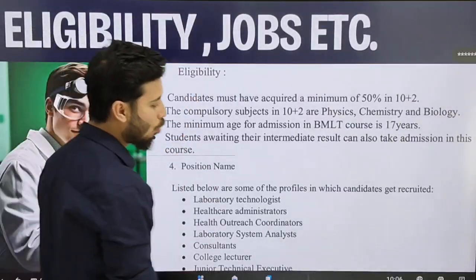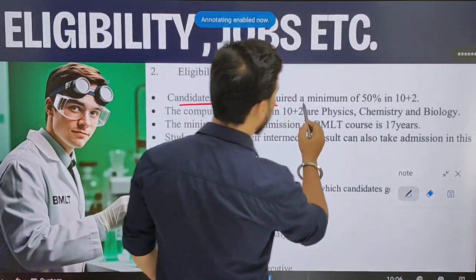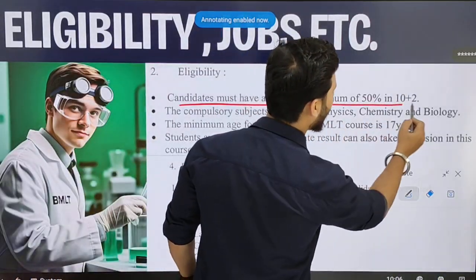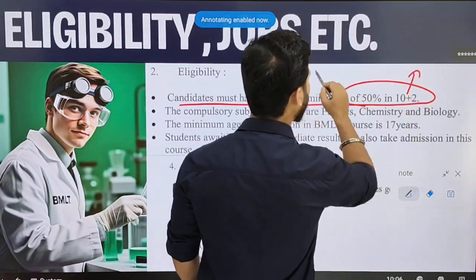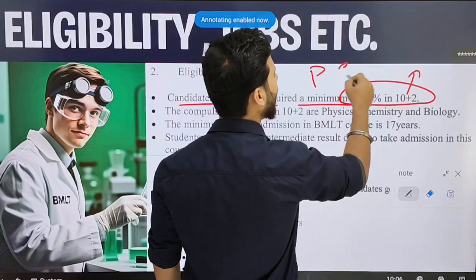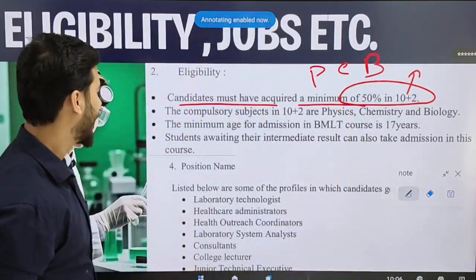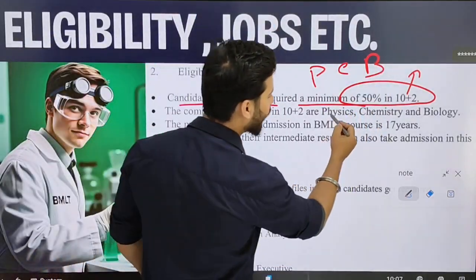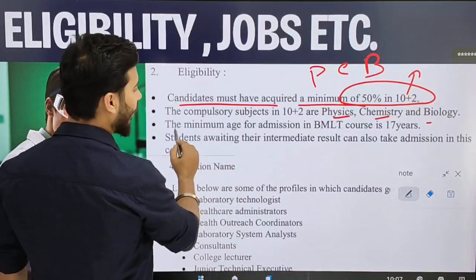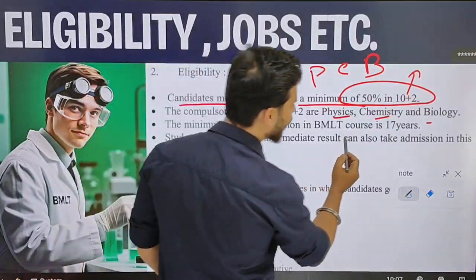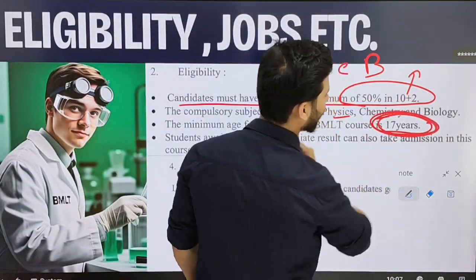Candidates must have acquired a minimum of 50 percent in 10+2. The required subjects are Physics, Chemistry, and Biology. The compulsory subjects are Physics, Chemistry, and Biology. The minimum age for admission to BMLT is 17 years.